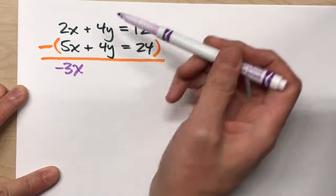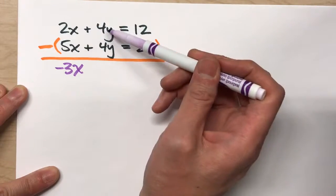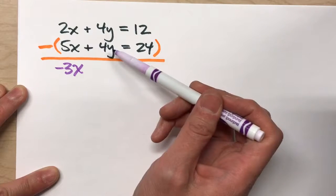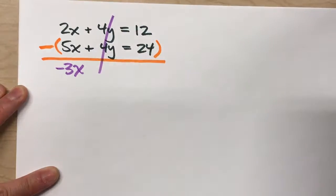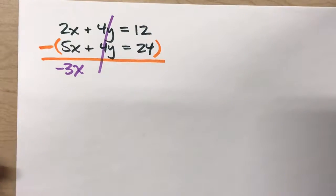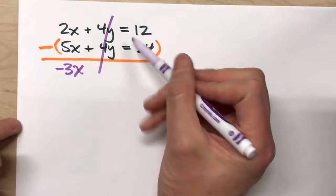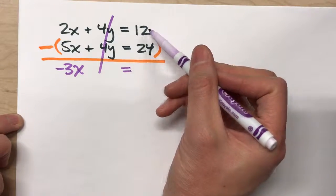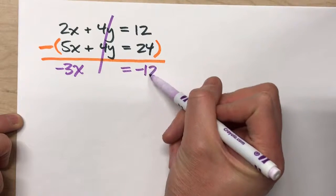But when we subtract the y's, four y's, positive four y's, minus another positive four y's, gets us no y's. We eliminate all of the y's. Drop down the equals, 12 minus 24, negative 12.